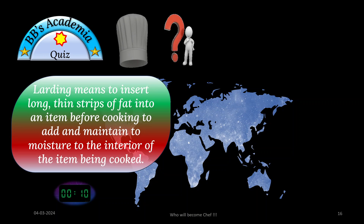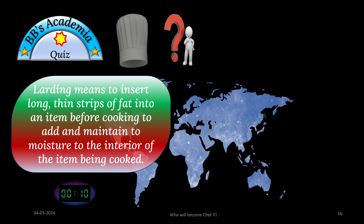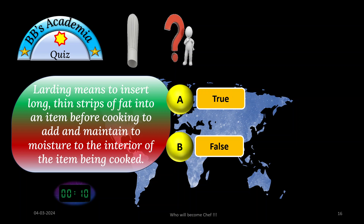Larding means to insert long thin strips of fat into an item before cooking to add and maintain moisture to the interior of the item being cooked. Two options — option A: true, option B: false. You have to find out the right option between these two. Time allotted: 10 seconds. Think and reply accordingly. Your time begins now.